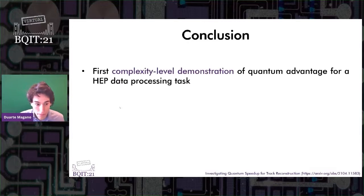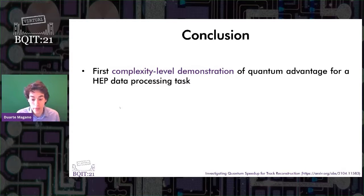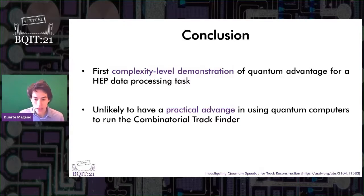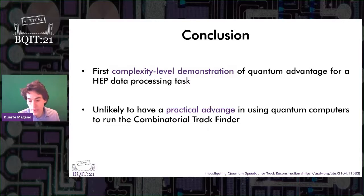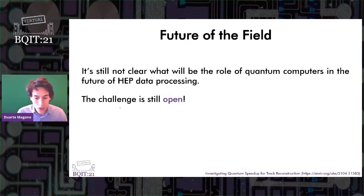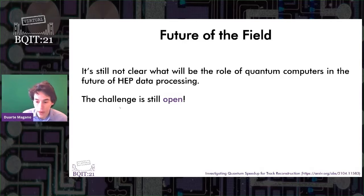To conclude, we have shown that with quantum computers we could reach a lower computational complexity for the Combinatorial Track Finder — as far as we know, a first for HEP data processing. But before getting too excited, the advantage is very modest: n⁴ classically versus n^3.5 quantumly. Given the cost of quantum gates and the cost of implementing QRAM access to the hits data — which we assume in our algorithm — it seems unlikely that this method will ever yield a practical advantage over classical methods. The future relationship between HEP data processing and quantum computation remains uncertain, but we hope this increasingly active field of research will bring some answers soon.